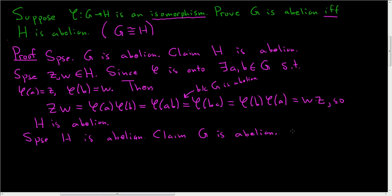So we'll take two elements in G, let's call them A and B again. So suppose A and B are in G, and we have to show that A times B is equal to B times A. Now we somehow need to use the fact that H is abelian, so the most obvious thing to do is to look at phi of AB. So then